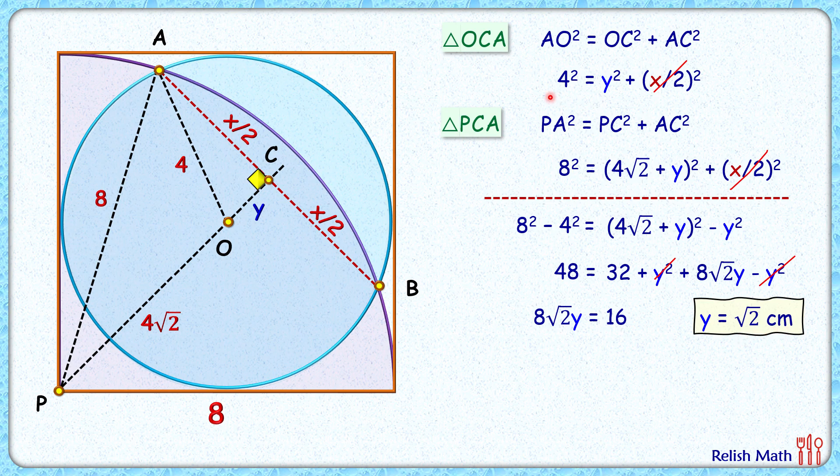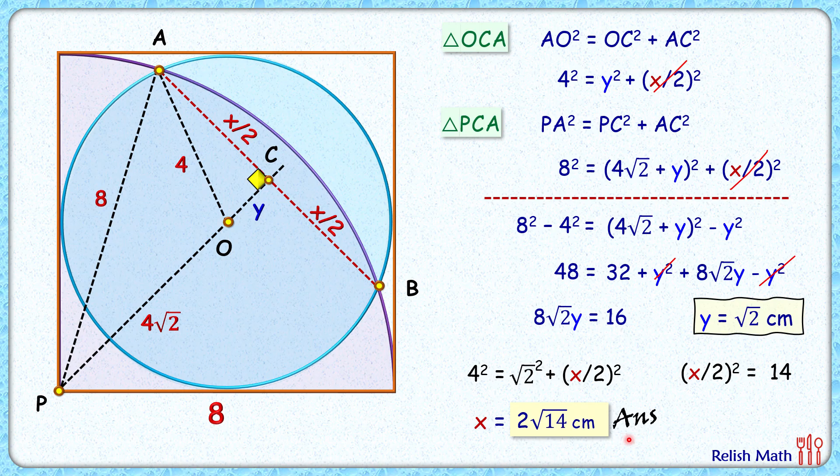Now in this first equation, 4² = Y² + (X/2)², let's replace Y² by (√2)². Simplifying, we'll get (X/2)² is 16 - 2 or 14. X/2 will be √14 and X will be 2√14 centimeter and that's our answer. I hope you enjoyed the solution.